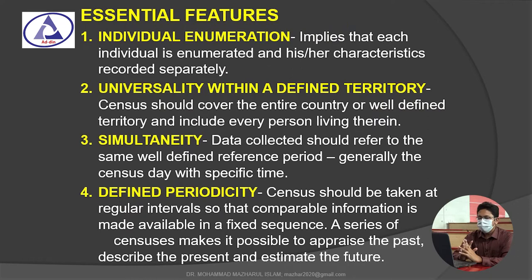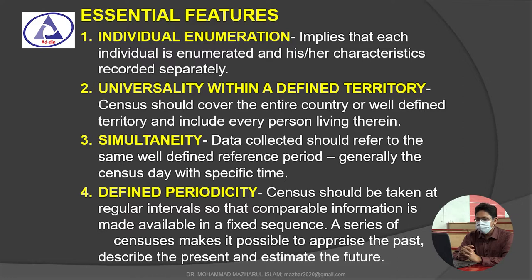The essential features of census are: Number one, individual enumeration — information is collected from every person individually. Number two, universality within a defined territory — data collection is universal and all persons are included. Number three, simultaneity — at a single date and time, each and every person is counted simultaneously. Number four, defined periodicity — usually, we conduct a census after 10 years.